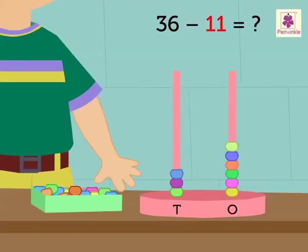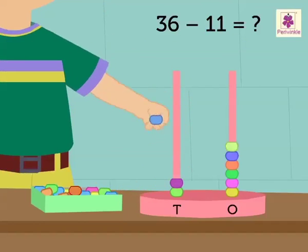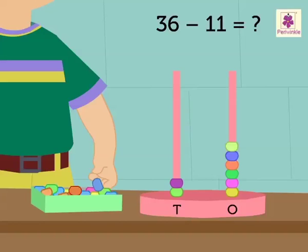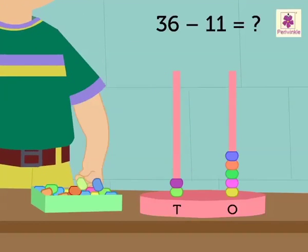Next, the subtrahend here being eleven, he removes one bead from the tens rod and one bead from the ones rod.